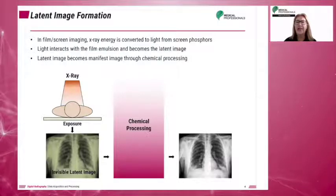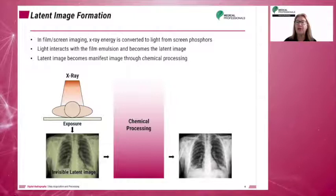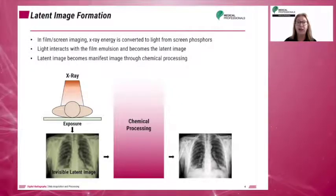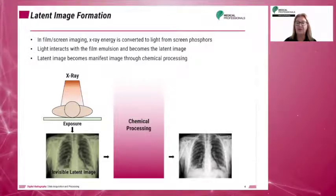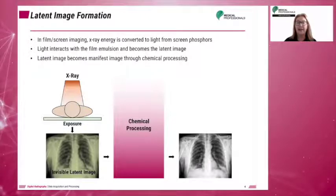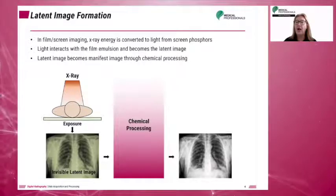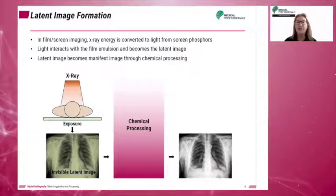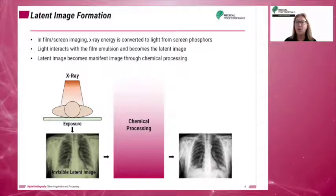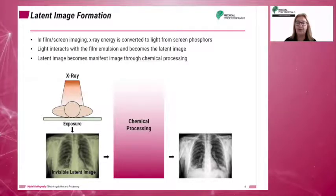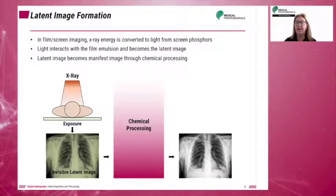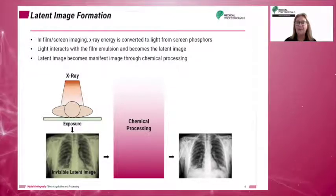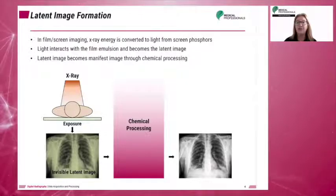Before looking at data acquisition in digital imaging, we need to understand the difference between an analog signal and a digital signal. X-ray equipment produces an analog signal. Analog signals are continuous — in X-ray, the signal is in the form of voltage fluctuations on a continuous waveform, or in other words, an electrical signal. In film screen imaging, the analog signal produced interacts with the intensifying screen phosphor and is converted into visible light.